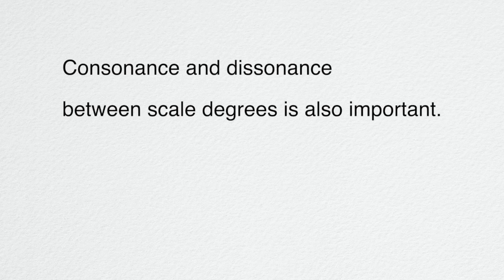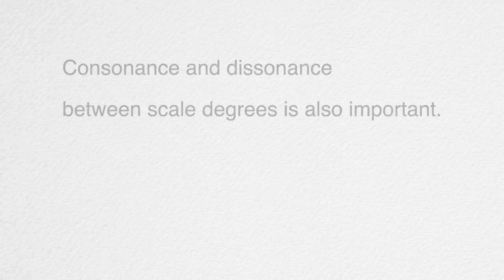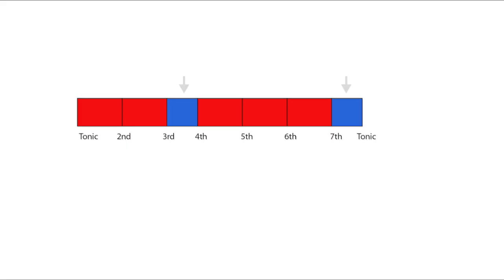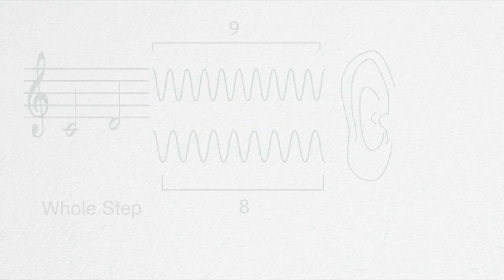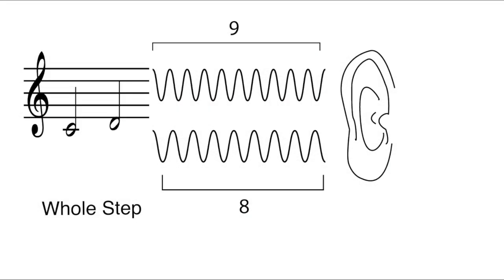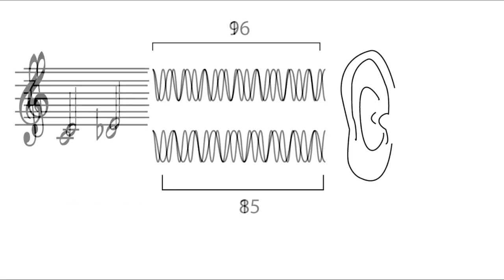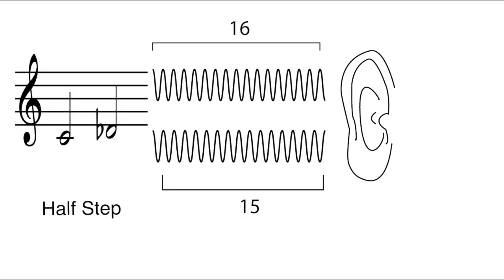The consonance and dissonance between scale degrees, that is not just related to the tonic but next to each other, is also important, and this is where the half steps become such a big factor. The ratio between a note and another note a whole step away is around nine to eight, which is a bit dissonant but not too terribly bad. But the ratio between two notes a half step apart is more like sixteen to fifteen, which is the most complex ratio and therefore dissonant relationship we have, which you'll know if you've ever played or sang a note a half step wrong in a performance.